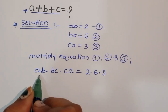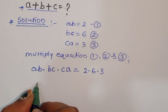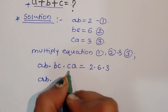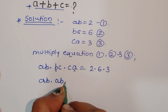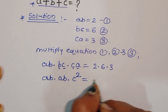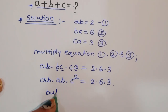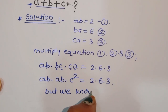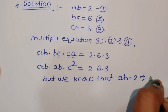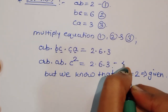Now you can see ab, bc, and ca, so we can write this as a squared b squared c squared — that is (abc)² — is equal to 2 times 6 times 3. Now we know that ab is equal to 2, as given in the question, so we can substitute this value in equation 4.